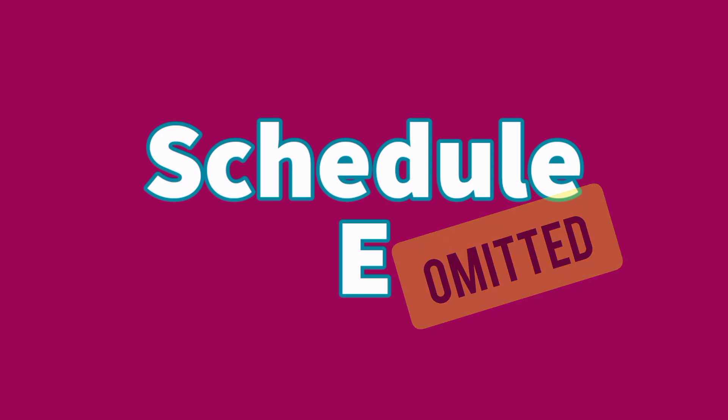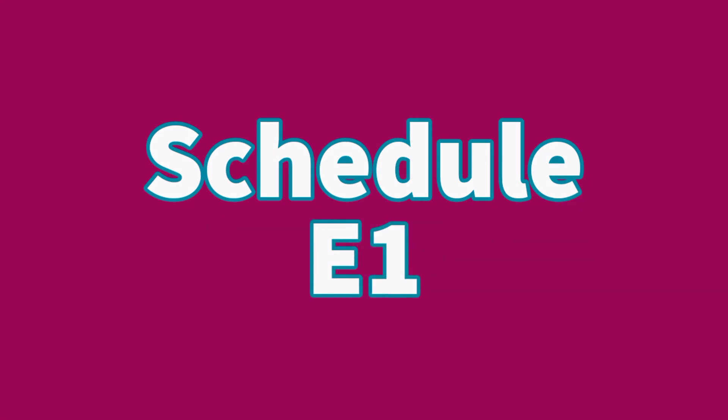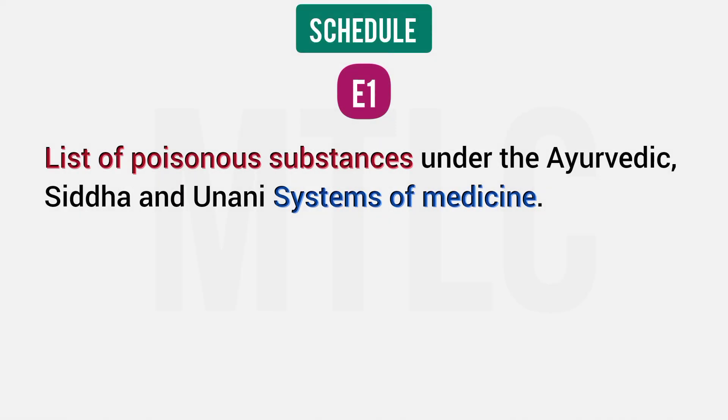Schedule E is omitted from the current course. Schedule E1 covers Ayurveda, Siddha, and Unani medicines. Any poisonous substances used in these systems are listed under Schedule E1.